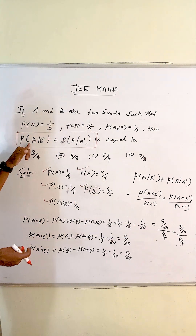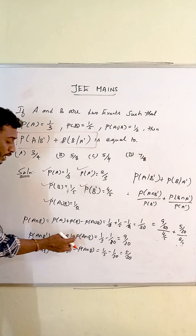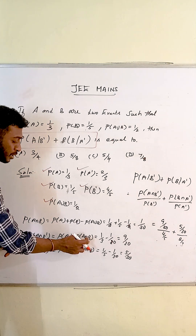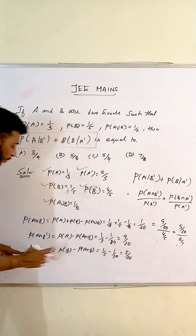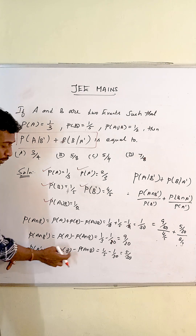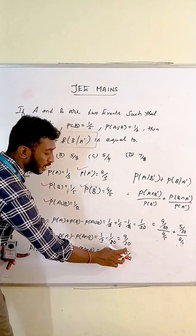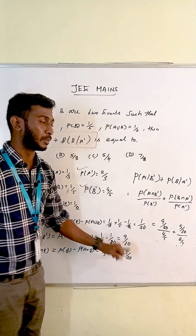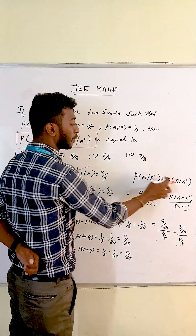For A intersection B-bar, the formula is P(A) minus P(A intersection B), and substituting gives the value. For B intersection A-bar, the formula is P(B) minus P(A intersection B). Substituting gives 5/30. Now for the required expression P(A given B-bar) plus P(B given A-bar).